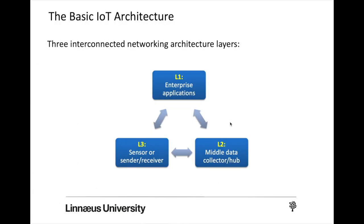In the basic architecture of IoT, there are three interconnected layers. In the first layer, or at the very high level, we have the enterprise applications. Enterprise applications interact with people, manage large databases, along with email, web browsing, video streaming, etc.